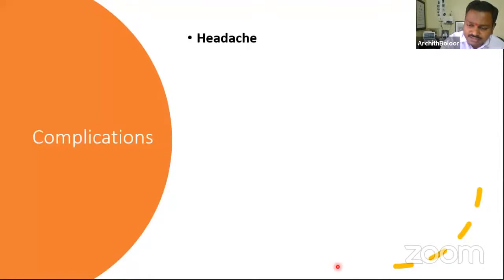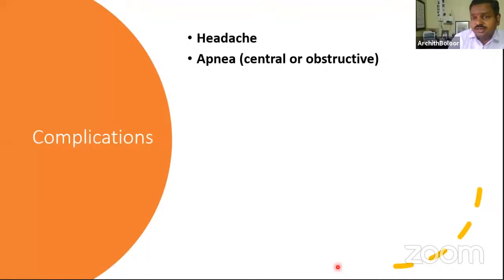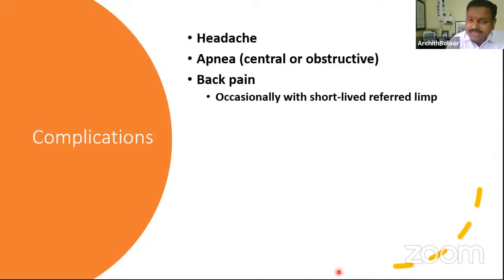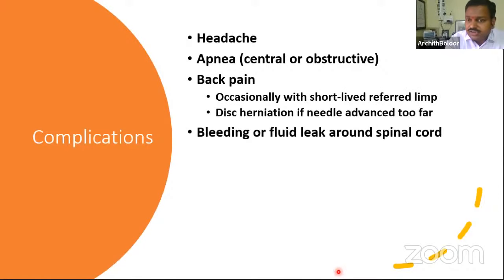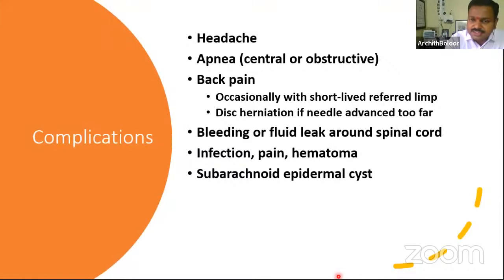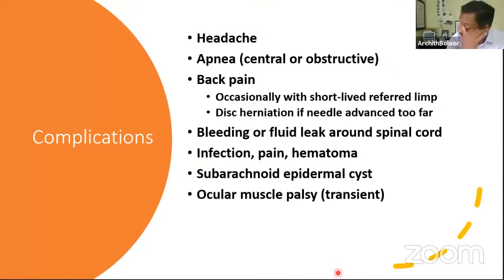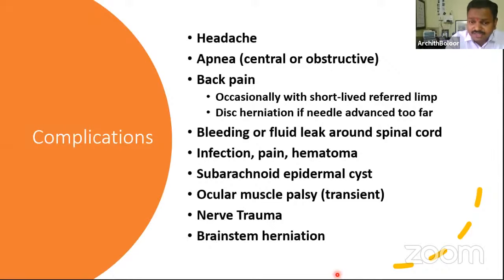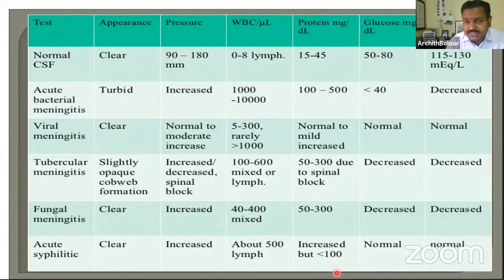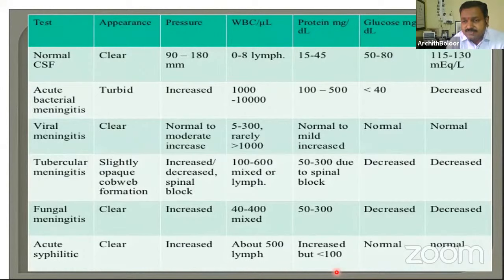Other complications of lumbar puncture, though not common: if too much CSF is removed rapidly, the patient can go into coning and develop apnea. Back pain may occur at the site. Bleeding, fluid leak around the spinal canal, infection, hematoma can occur. Rare complications include epidermoid cyst, oculomotor palsy due to coning, nerve trauma, and brainstem herniation, which is a serious side effect.